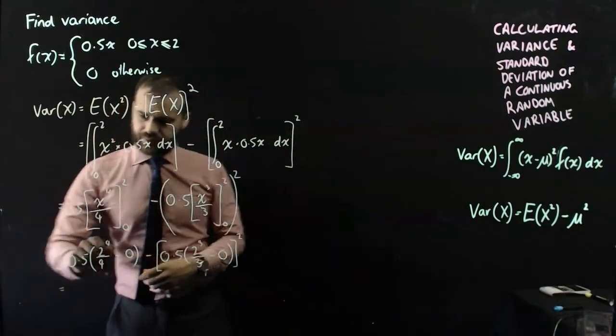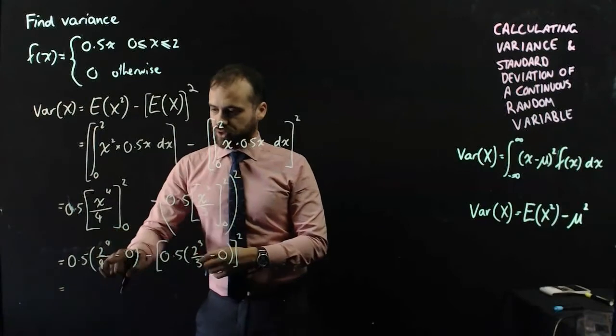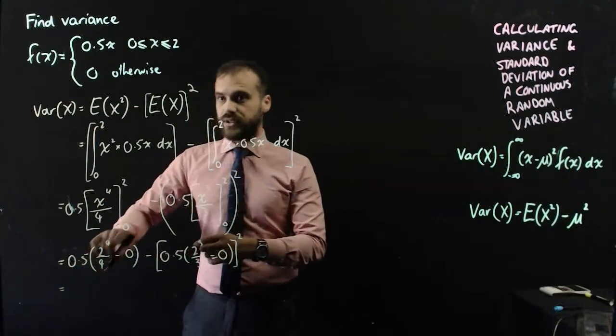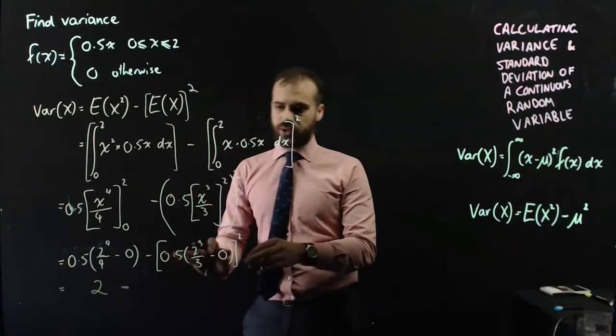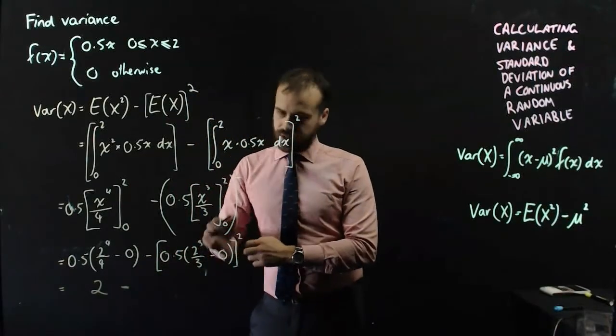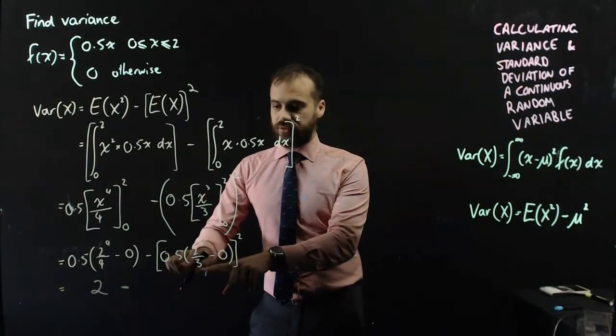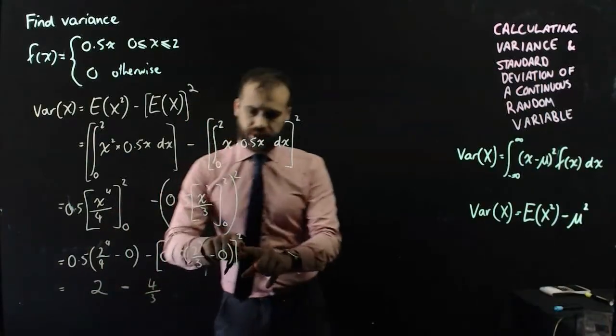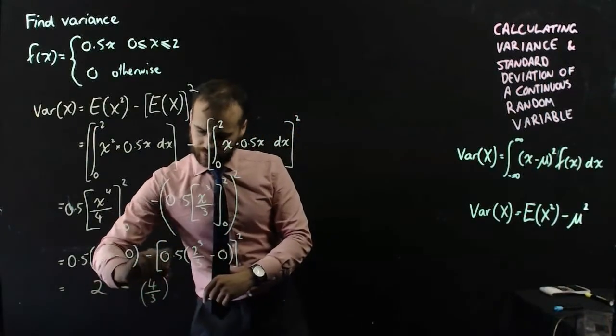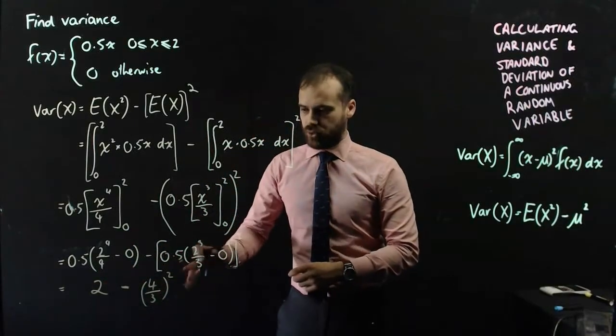So, that's, 2 to the 4 is 16, divided by 4 is 4. 16 divided by 4 is 4, times 0.5 is 2. Minus. I'm just going to be a bit more careful here. 2 to the 3 is 8. 8 over 3. 8 over 3 times 0.5 is 4 over 3. But, then I need to square it.